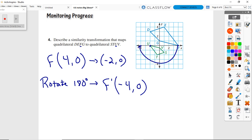So that would go over to here, and then we can shrink it in by dilating it with a scale factor. To go from this point to this point I want to cut it in half, so that's going to be a scale factor of a half. So there is a similarity transformation that would map it.